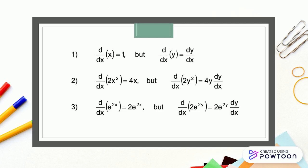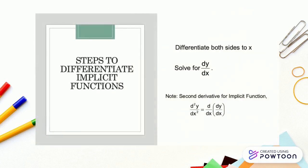We have two steps for implicit differentiation. Step 1: Differentiate both sides with respect to x. Step 2: Solve for dy/dx. Note that for the second derivative of implicit functions, we follow a similar process.